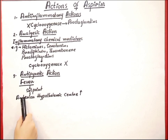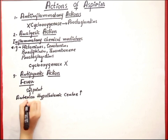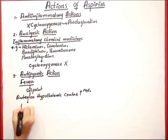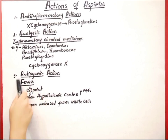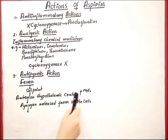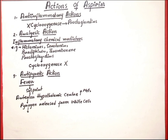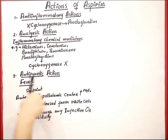What causes the elevation of the anterior hypothalamic center? This may be caused by the synthesis of prostaglandin E2 (PGE2). PGE2 synthesis is stimulated when endogenous fever-producing agents — pyrogens such as cytokines — are released from white blood cells. These pyrogens may be released through any infection or hypersensitivity. In this way, fever occurs within our body.